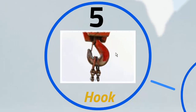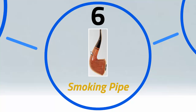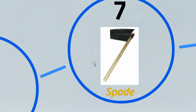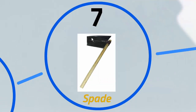5 looks like a hook — the hook of a crane. Let me trace the 5 in this image of a crane hook for you. Can you see the 5? So this is the link between the digit 5 and the word hook. 6 looks like a smoking pipe. 7 looks like a spade, an agricultural equipment that is used in farms for tilling soil.